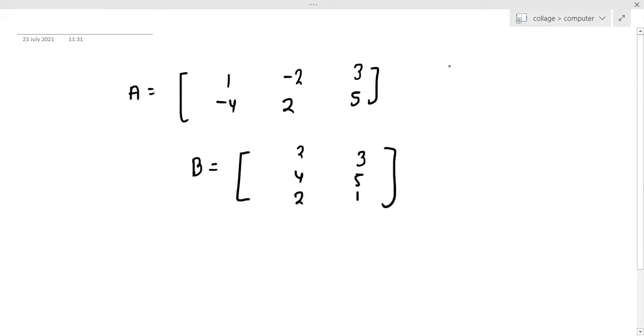So first, what do we need to check for the product? First, check the order. So it's 2 rows and 3 columns, and there are 3 rows and 2 columns. And if this number, which is 3, which is the second number, matches the first number, then we can do the product. This is the first condition of the product.